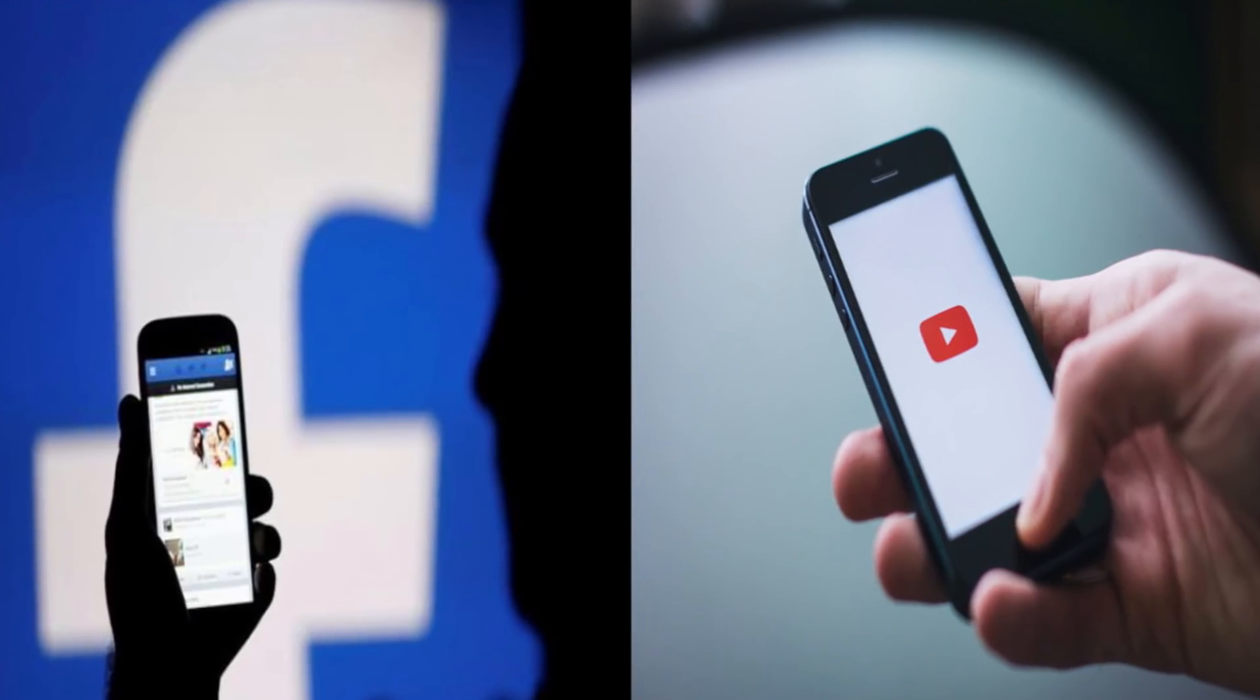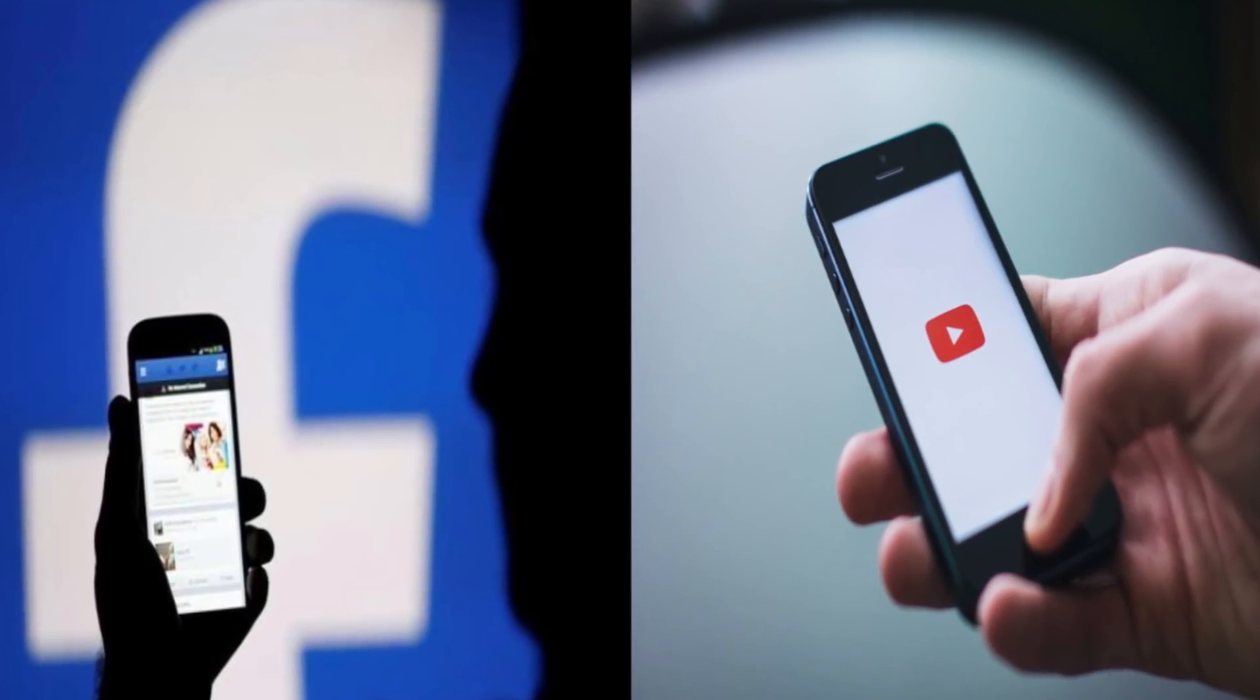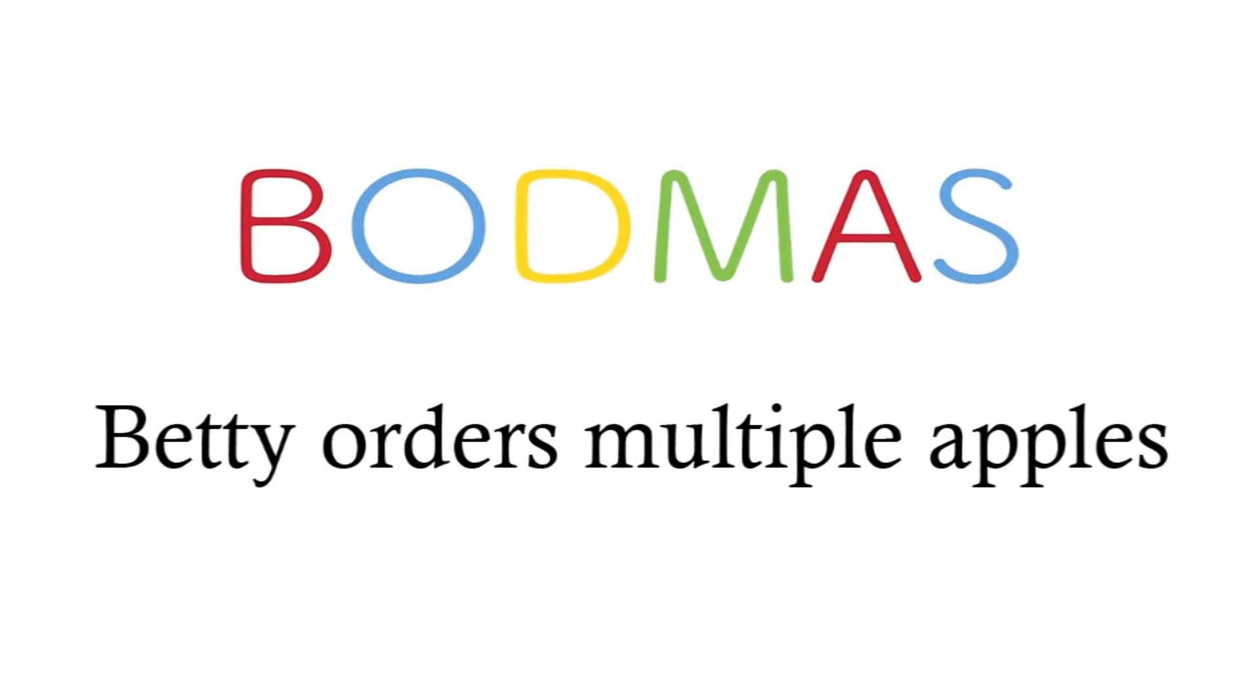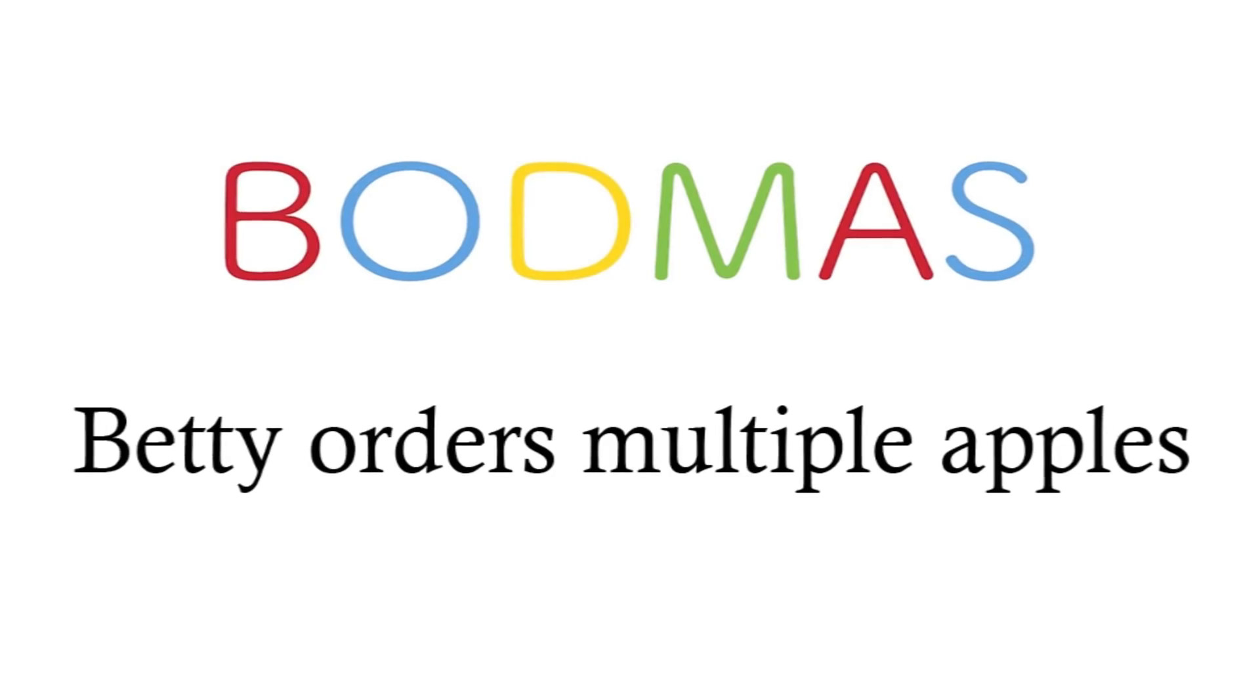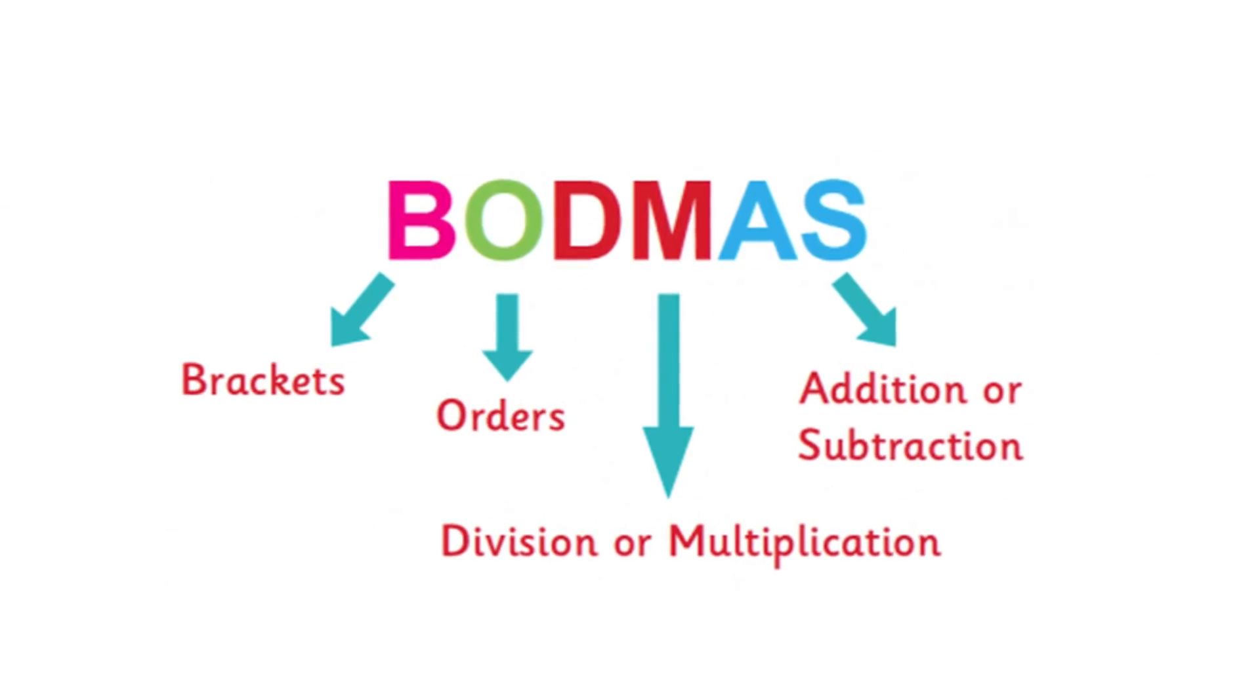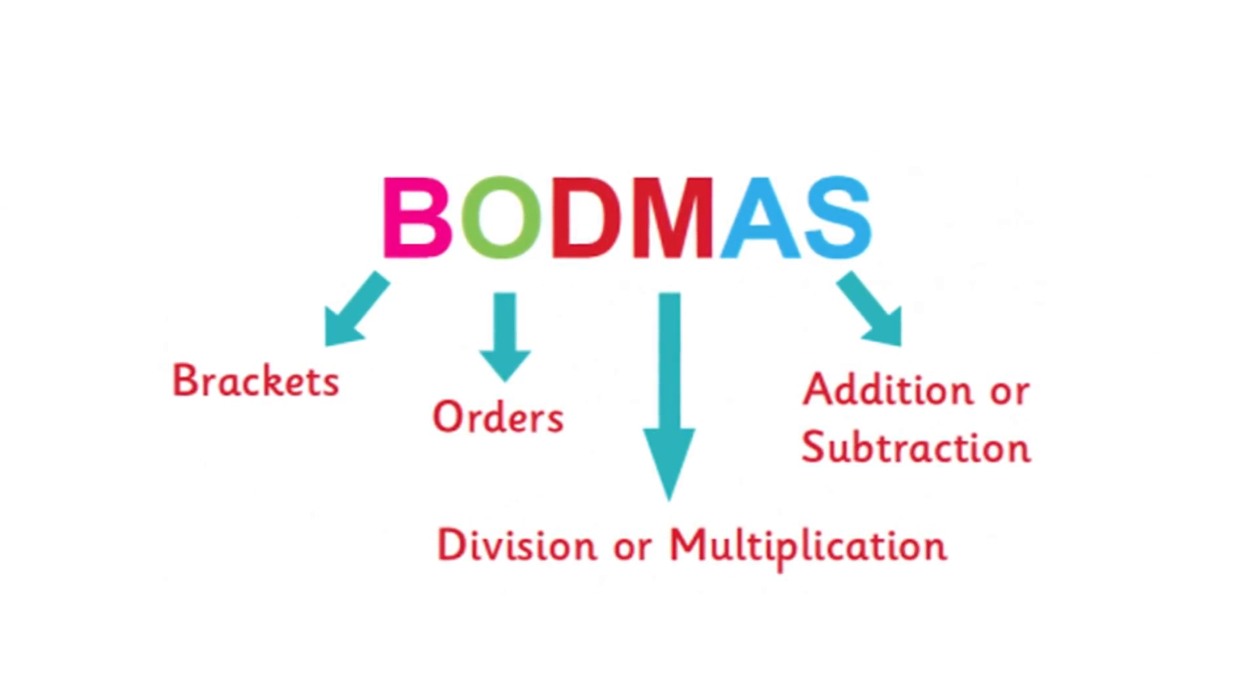The next time you're reading your Facebook newsfeed or watching YouTube videos, now you'll have a good chance of getting the next one right when you remember the order of operations. If you can't remember the order, you can make up a sentence to help. For example, Betty orders multiple apples. That stands for brackets, order, multiplication, division, and addition-subtraction.